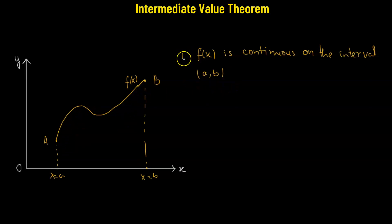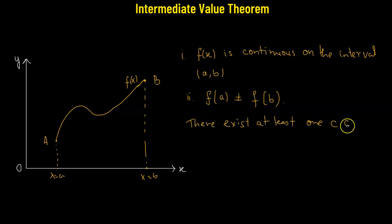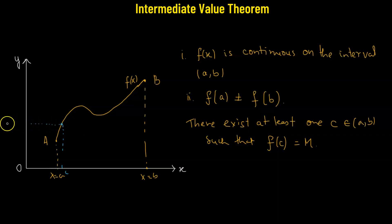Next, we have f calculated at x equals to A is not equal to the value of the function at x equals to B. Then the intermediate value theorem tells us that there exists at least one C. The C is going to lie between A and B such that f of C equals to M. So let's say this point corresponds to C. So here, C lies between A and B. For this particular value of x equals to C, we have a value M.